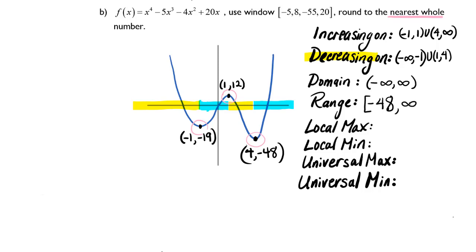My local maximum, this is at 1, 12. Notice that the graph keeps continuing upwards, but for this interval, the interval we are looking at, the local maximum is at 1, 12.